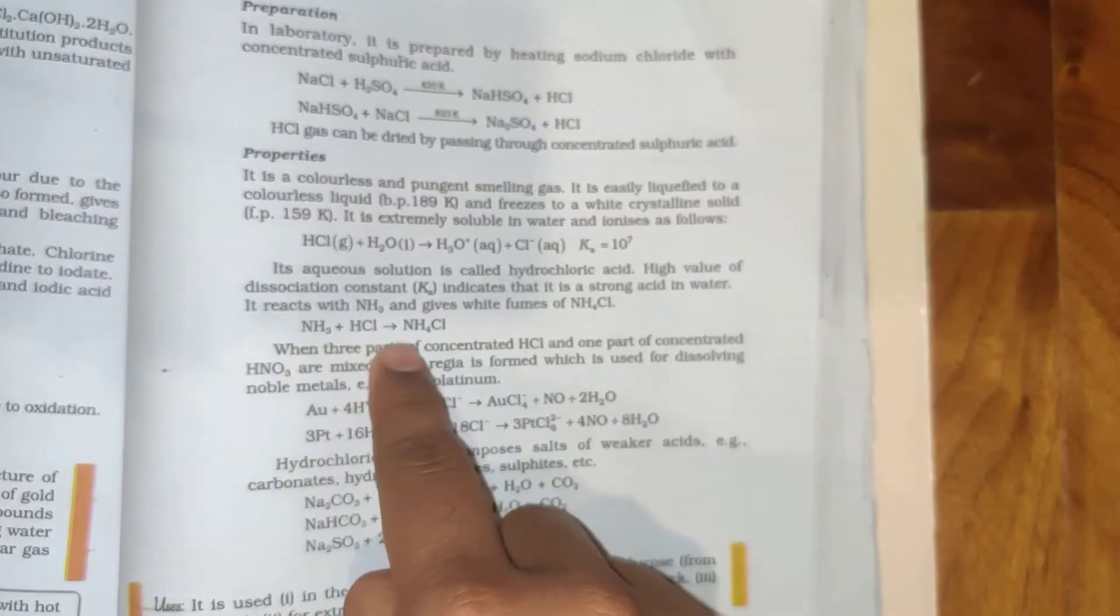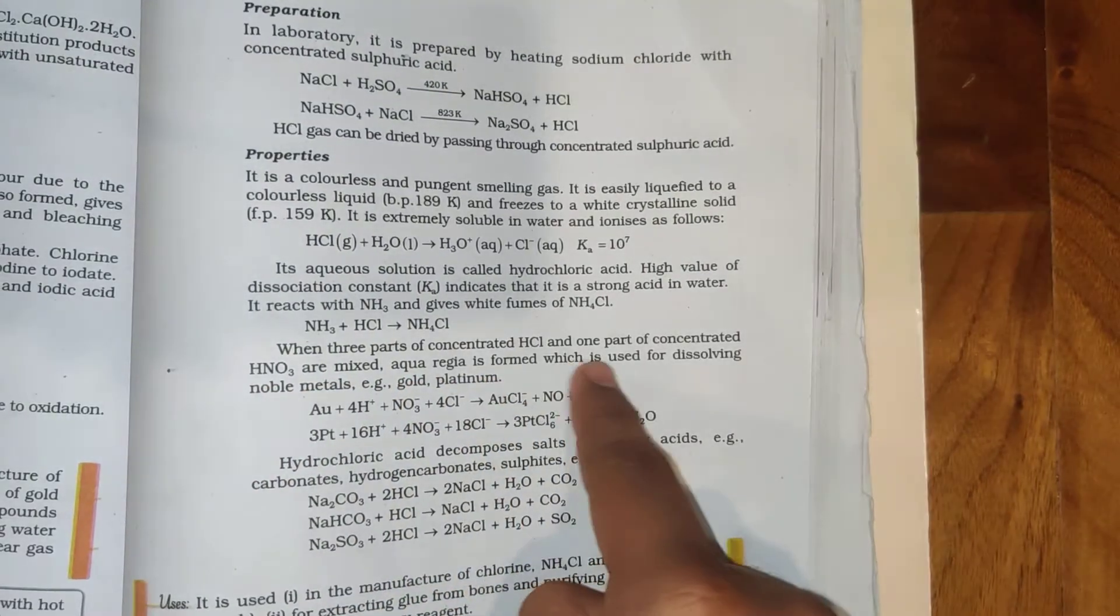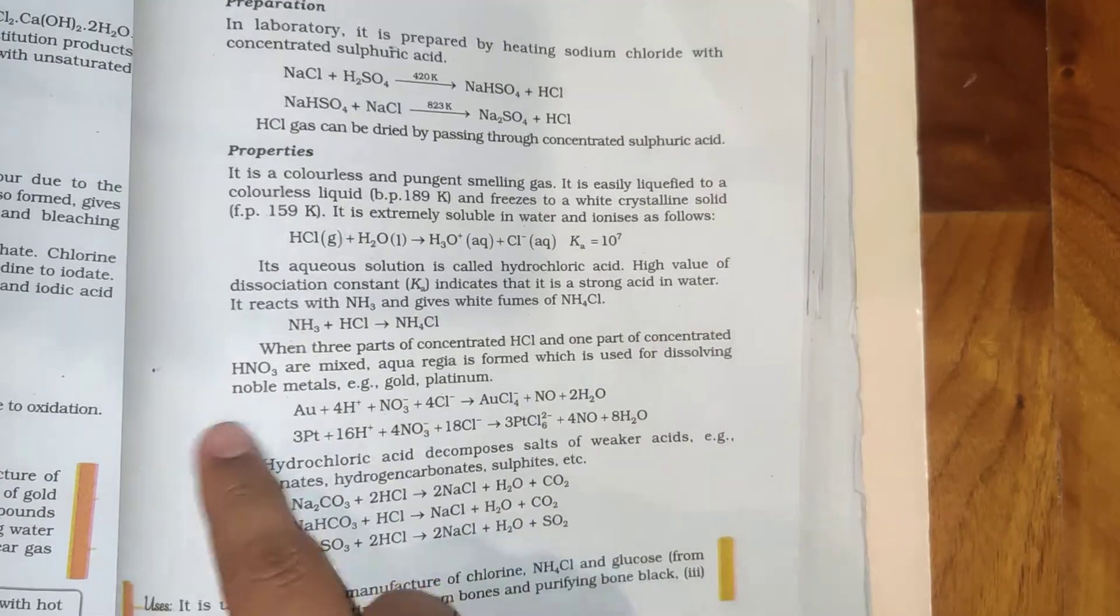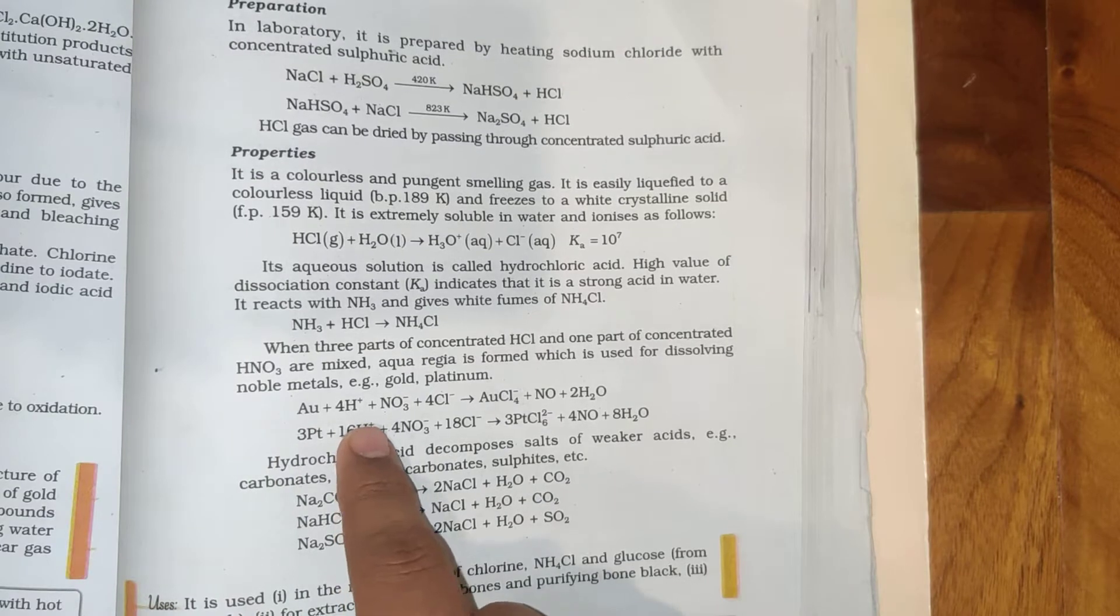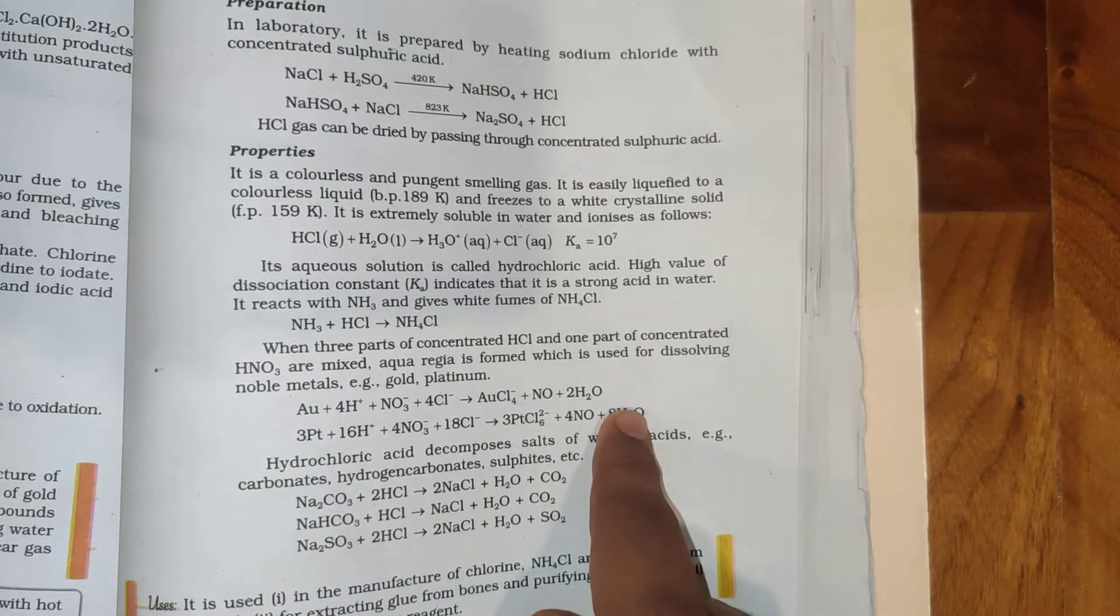NH3 plus HCl gives NH4Cl. When three parts of concentrated HCl and one part of concentrated HNO3 are mixed, aqua regia is formed which is used for dissolving noble metals, e.g. gold, platinum. Au plus 4H plus plus NO3 minus plus 4Cl minus gives AuCl4 plus NO plus 2H2O.